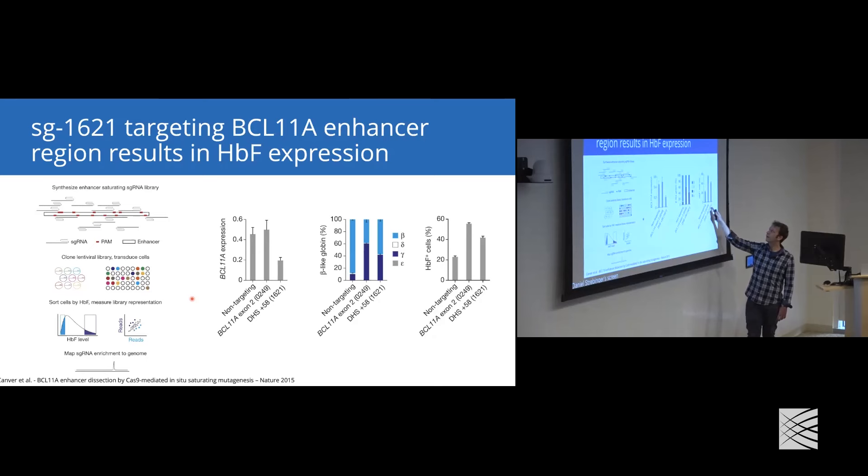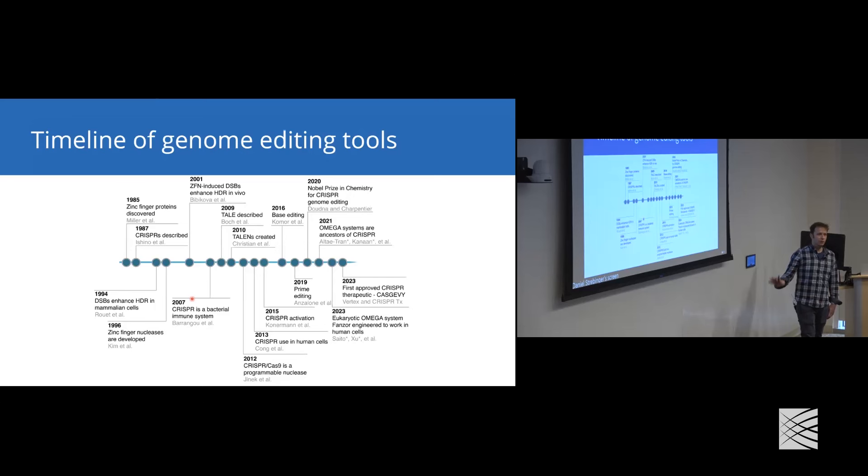This single guide 1621 that was described by Canver et al. in 2015 is now the active ingredient and the active guide RNA in Casgevy.